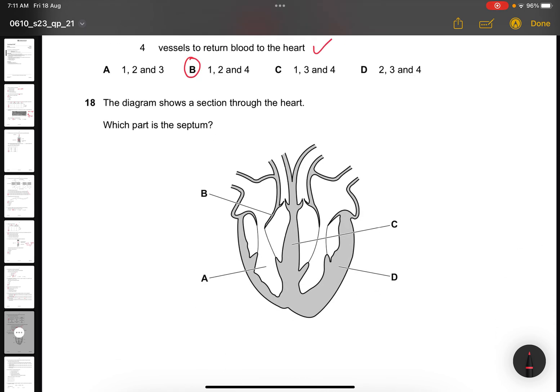Question 18. The diagram shows a section through the heart. Which part is the septum? Septum is in the center, which is C, which separates the left side and the right side of the heart.